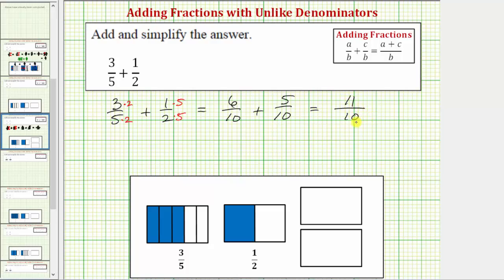This is not simplified because the only common factor between eleven and ten is one. But because we have an improper fraction, let's also write this as a mixed number. This is an improper fraction because eleven is greater than or equal to ten.